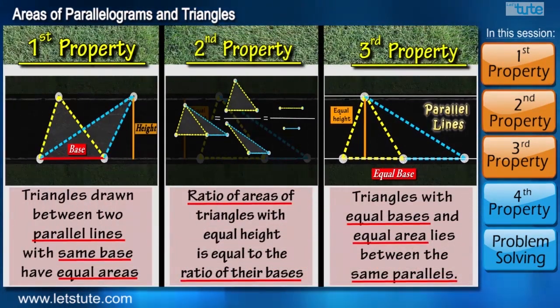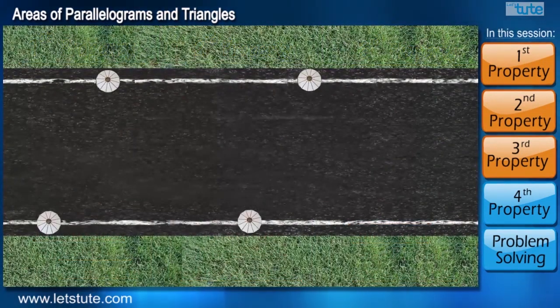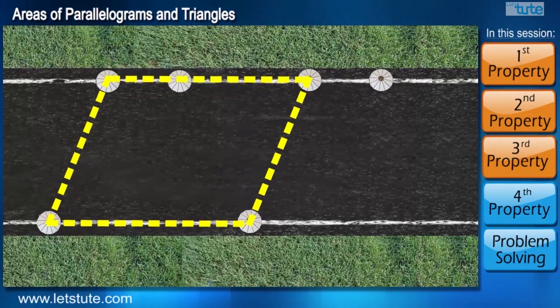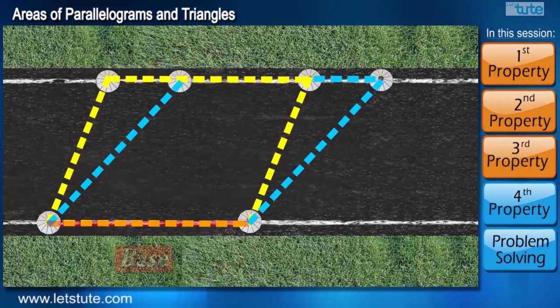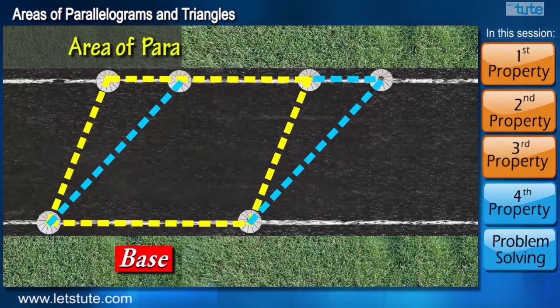Here we are done with properties of triangles. Let's do a small recap before we move to the property of parallelograms. Here we move to one and the last property of this session based on parallelogram. Now if we look at the same street lights arrangement, we can make a parallelogram out of it. Suppose if we add two more street lights on the top, then we can see that we have two different parallelograms but with the same base. So can you think of something of the area of these parallelograms?